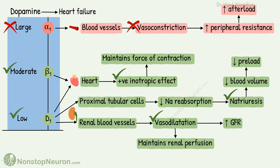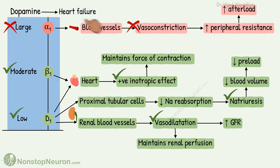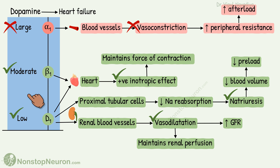Quick summary: D1 receptors are stimulated at a low dose and contribute to the natriuretic effect. Beta-1 receptors are stimulated at moderate doses and produce a positive inotropic effect. Alpha-1 receptors are stimulated at higher doses and produce vasoconstriction. In patients with heart failure, we want only the natriuretic and positive inotropic effects, so dopamine is given in low to moderate doses.